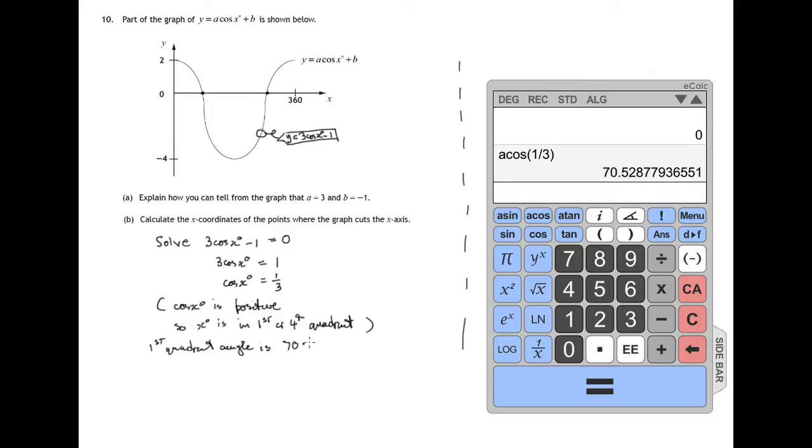70.5 approximately, that's to one decimal place. Now because we'll just be adding and subtracting this from 360, we can round it at this point. There's no problem. So first quadrant angle is 70.5.